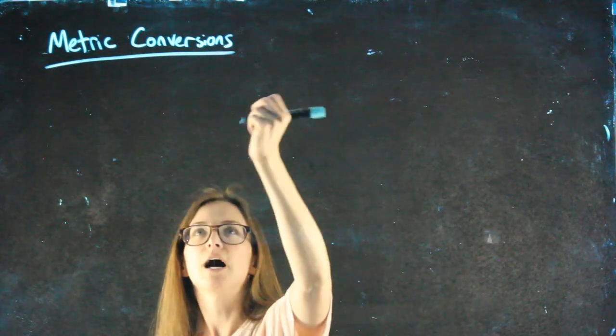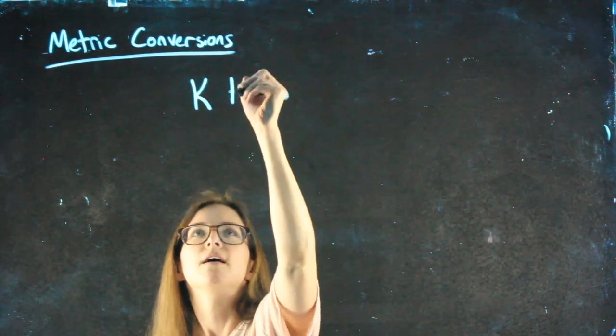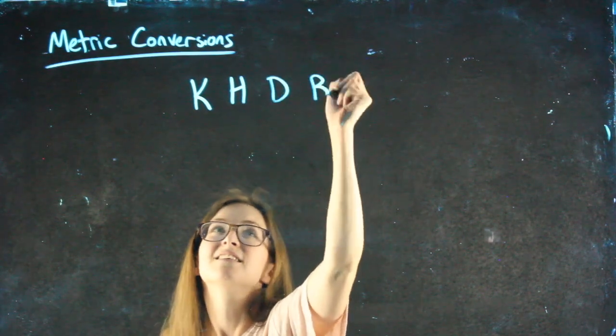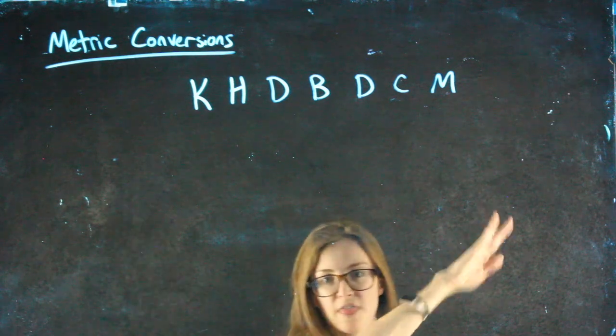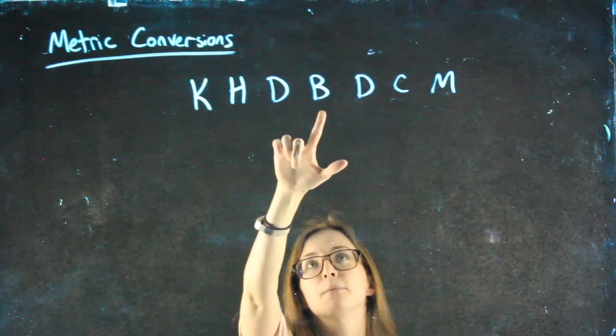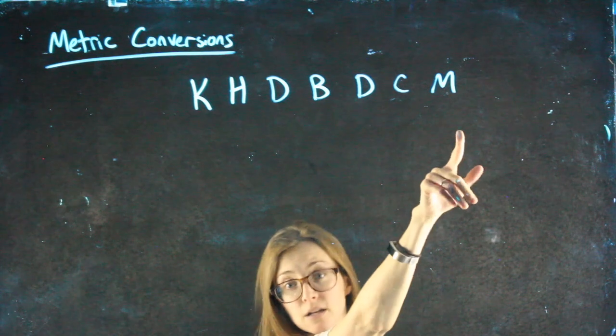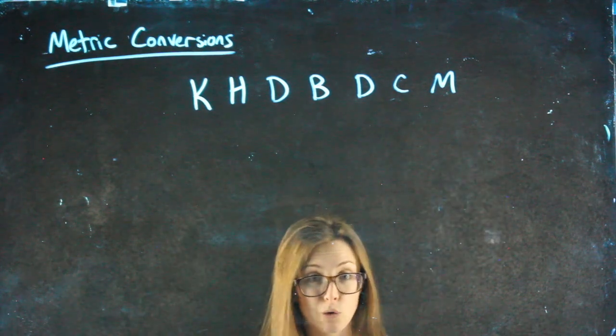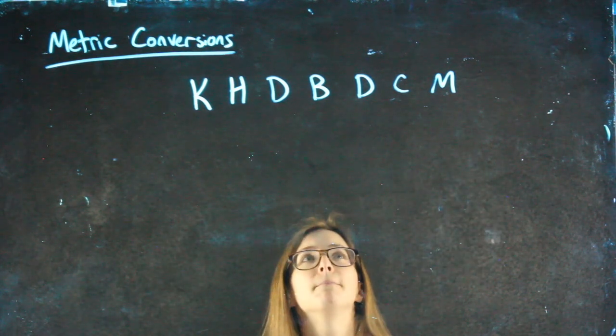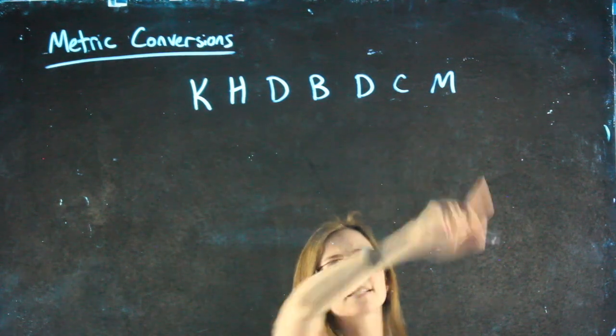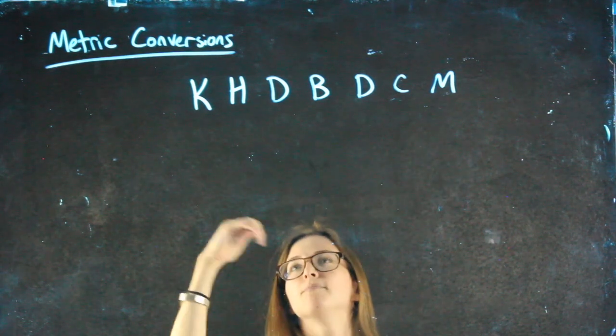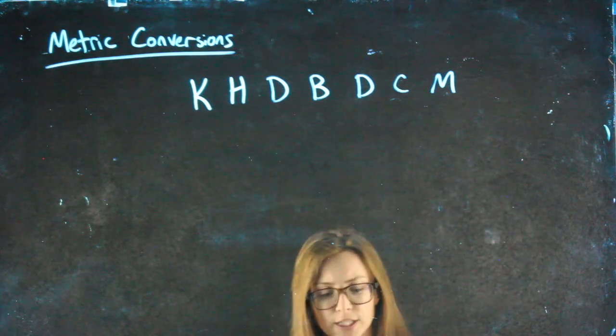So you may have learned this. People have different mnemonics remembering that set of letters. King Henry died by drinking chocolate milk is probably the one you were told in middle school. Or King Henry doesn't buy dumb cheap mice. Whatever you want, this order of letters helps us do metric conversions.